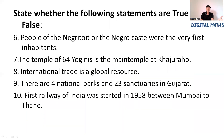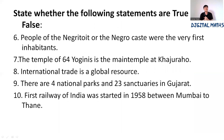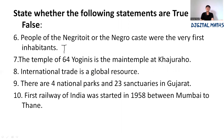Next is True or False — questions 6 to 10. The first true/false question (Q6): People of the Negroid caste were the first inhabitants — the answer is True. Q7: The temple of 64 Yoginis is the main temple at Khajuraho — the answer is True.